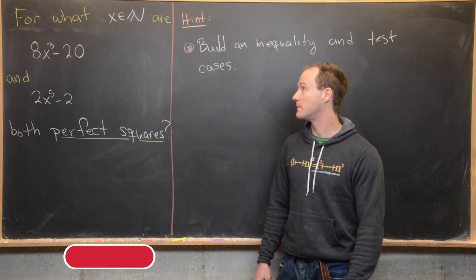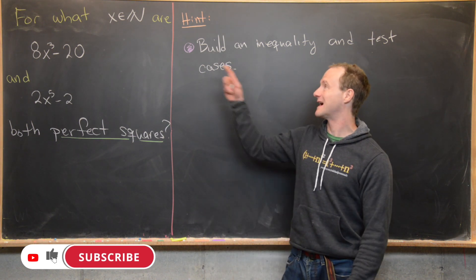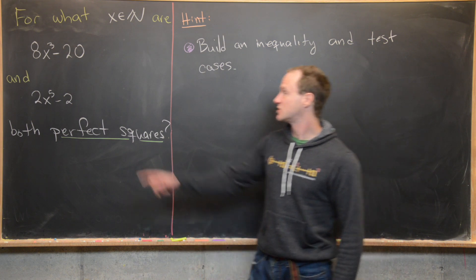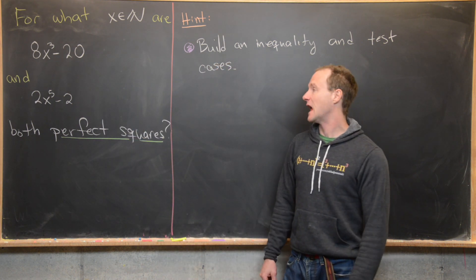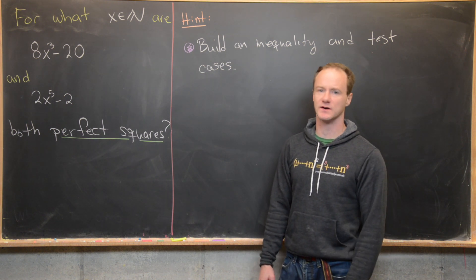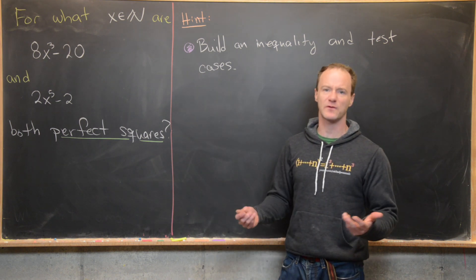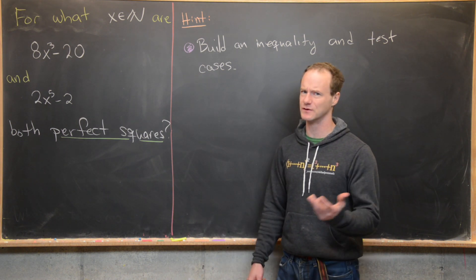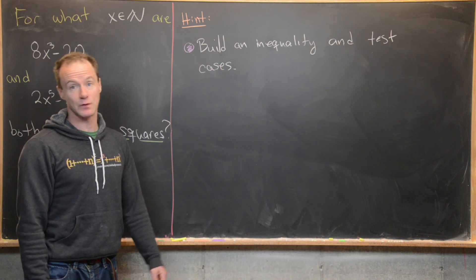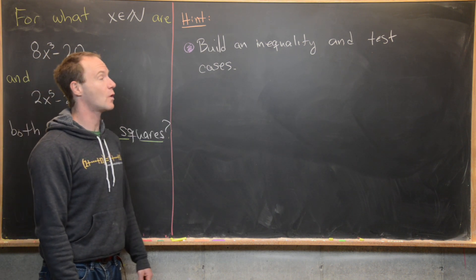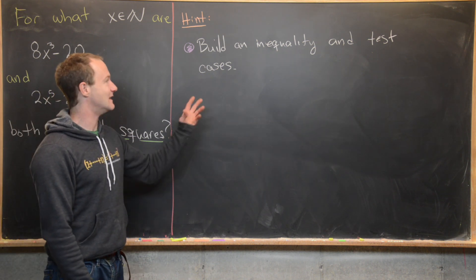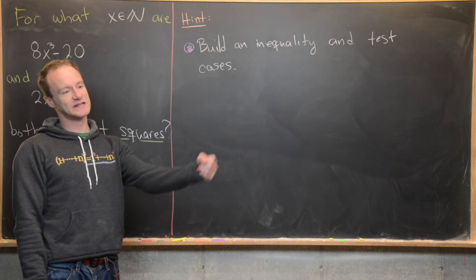Here we're going to look at a nice little number theory problem. Our goal is to find natural numbers x — that is, positive integers — such that 8x³ minus 20 and 2x⁵ minus 2 are both perfect squares. Before we get into a solution, the hint is to build an inequality that will show there are no such solutions after a point, and then test the individual cases before that point.